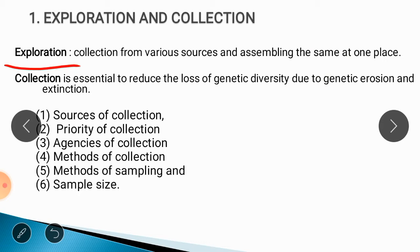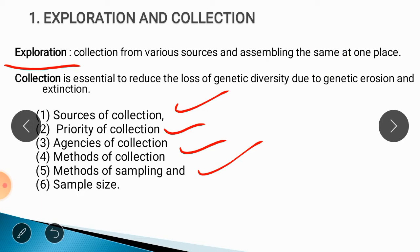In exploration and collection, there are six important aspects: source of collection, priority of collection, agencies of collection, methods of collection, method of sampling, and sample size. We are going to see all of these one by one.